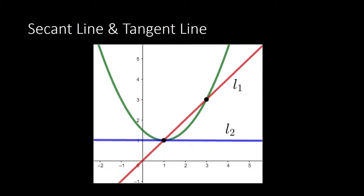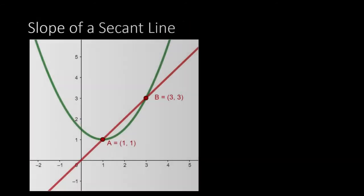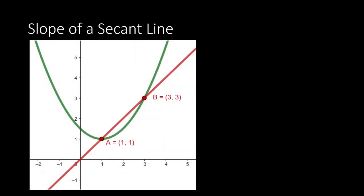Given the graph of your function shown by the green curve, the red line L sub 1 is a secant line. The blue line L sub 2 is a tangent line. Given a secant line that intersects our graph at points A and B.